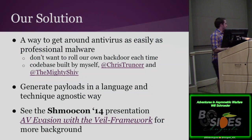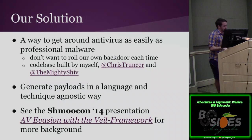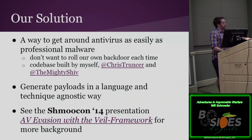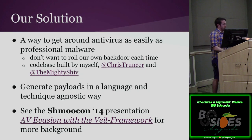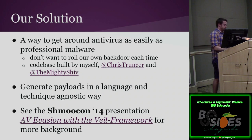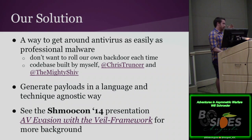Our solution: we wanted a way to get around antivirus as easily as professional malware, without rolling up a home-grown vector every time or maintaining multiple environments — a single monolithic attack platform. The codebase was written by myself, Chris Truncer, and our co-worker Amani Shib. The whole idea with Veil Evasion is generating payloads in a language and technique-agnostic way — like drag and drop, with folders divided by language and approach. You can write your own private modules and drop them in. We also have tutorials and documentation at VeilFramework.com. There was also a DEF CON presentation this year, 'Aviation with the Veil Framework,' with video and slides online.